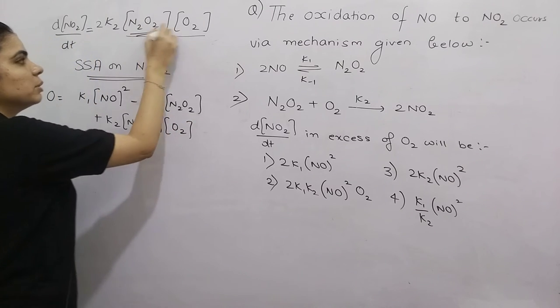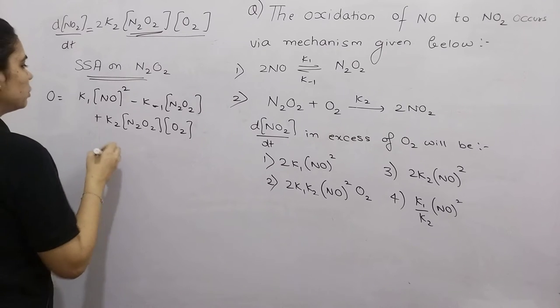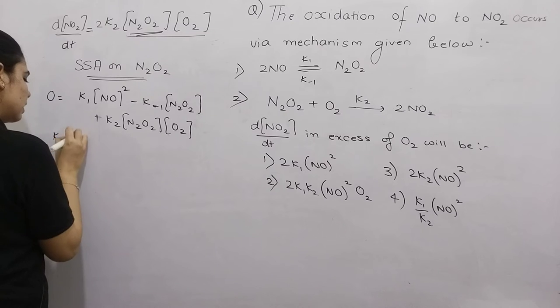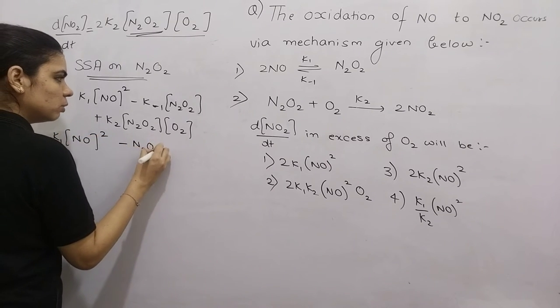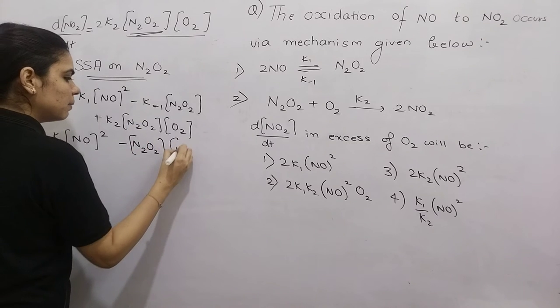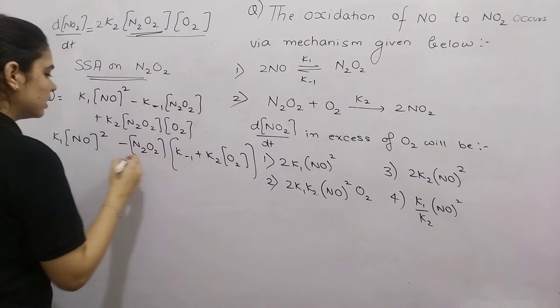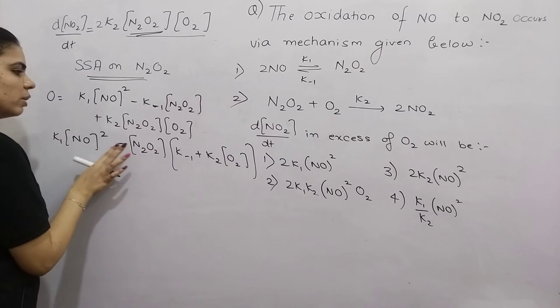Now I need to find the value of N2O2. If you solve this: K1[NO]^2 minus N2O2 taken common leaves K-1 plus K2[O2]. This equals zero.